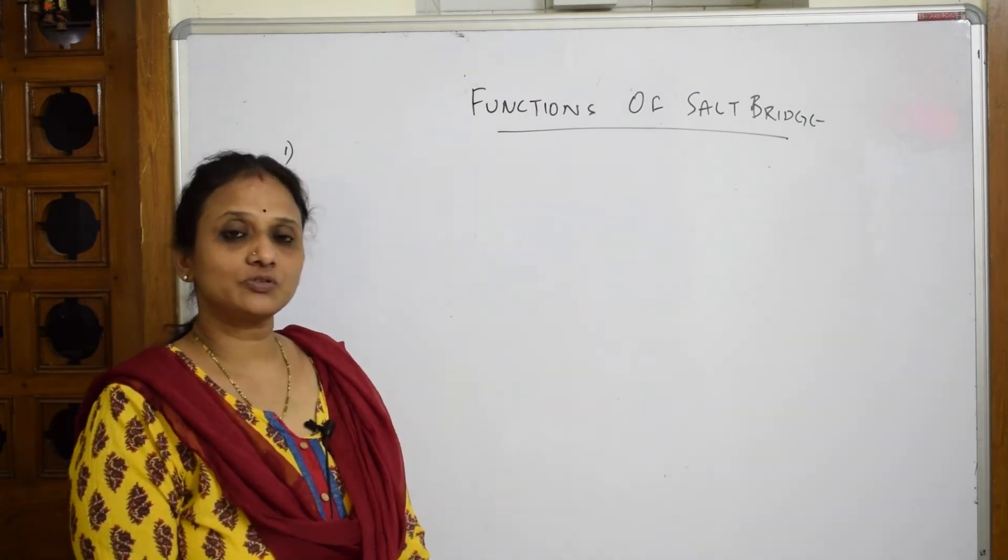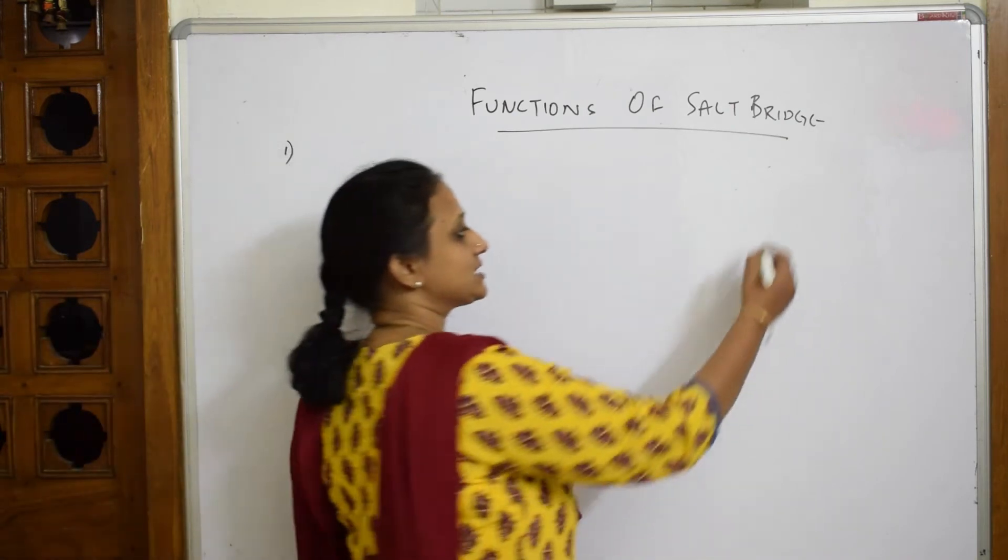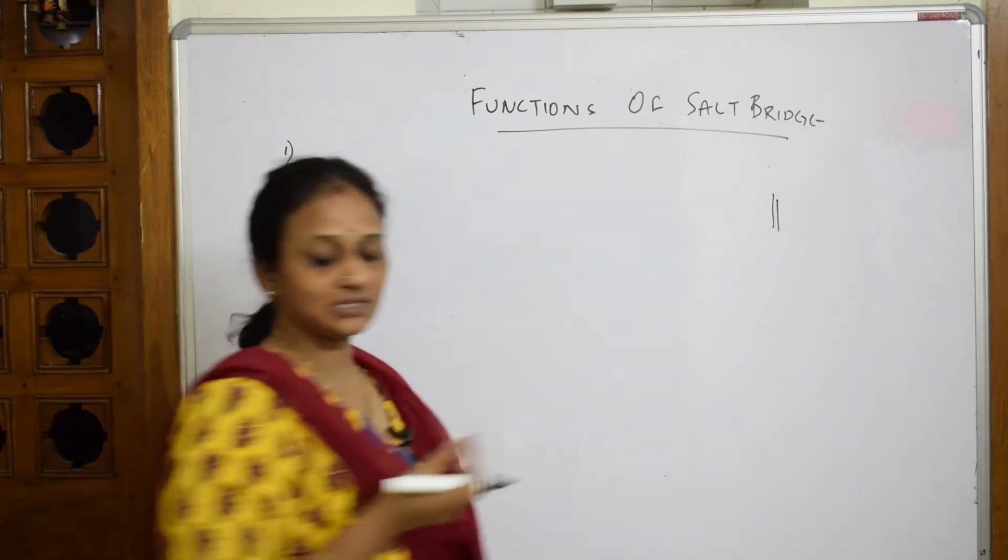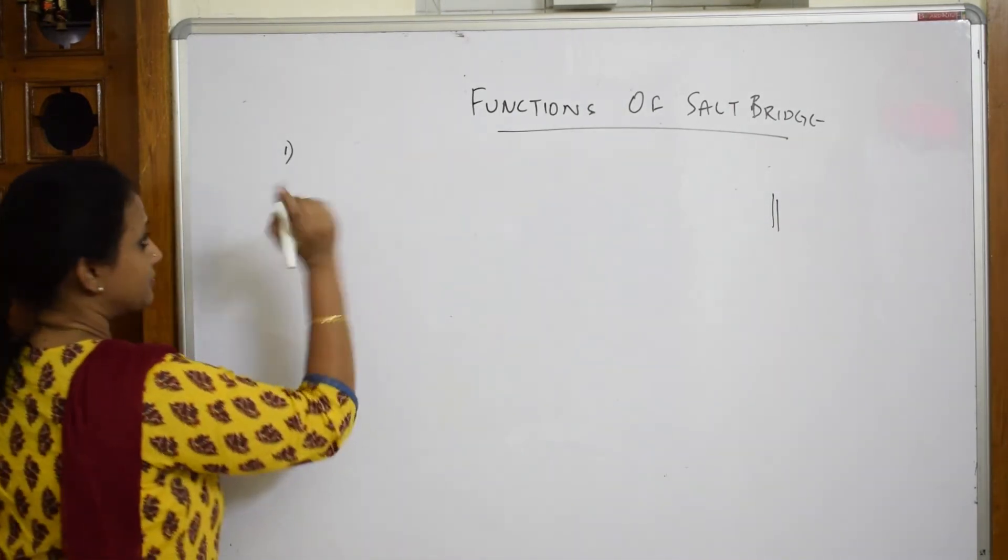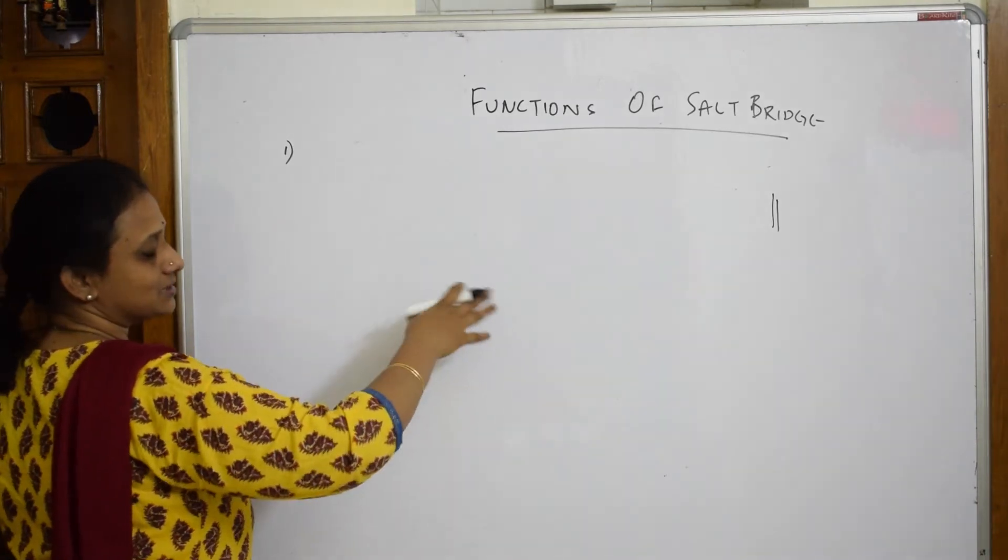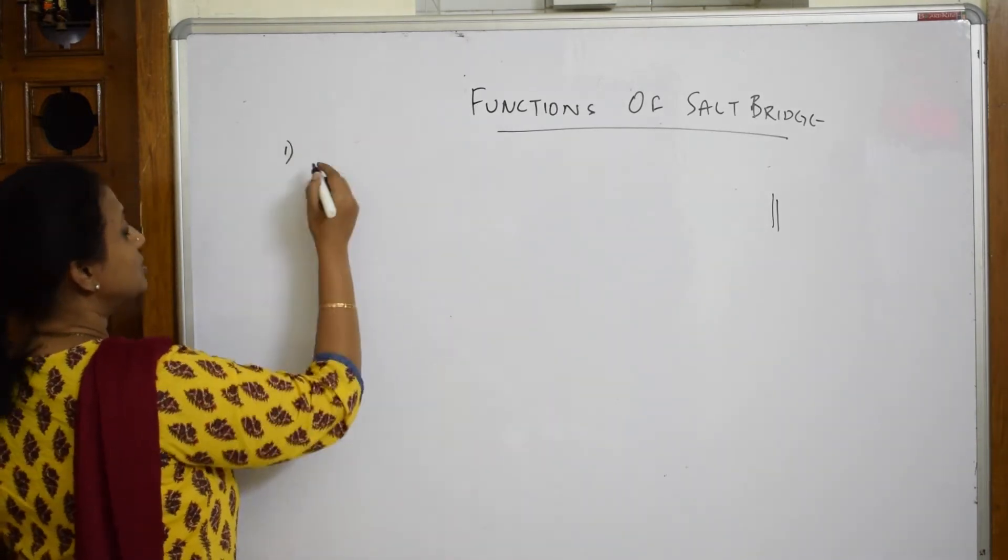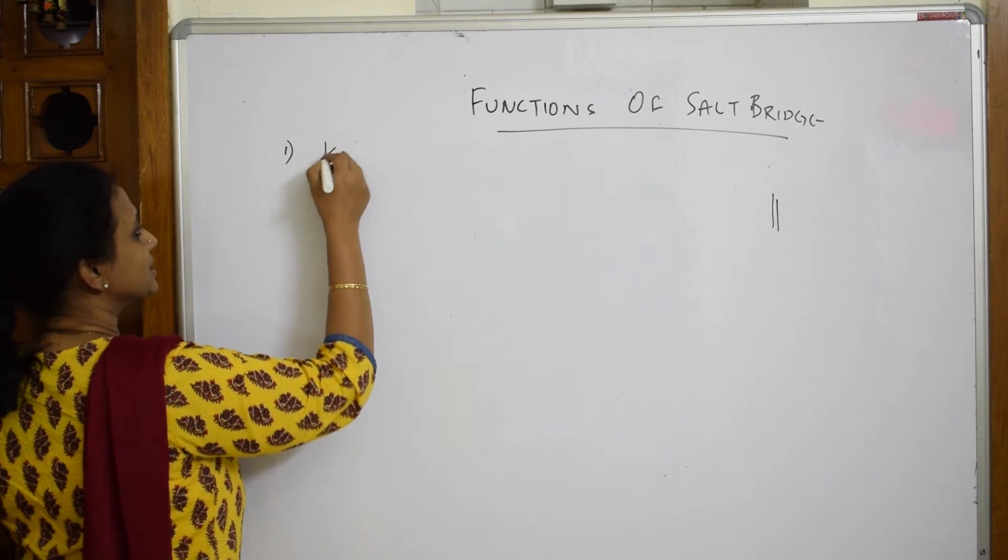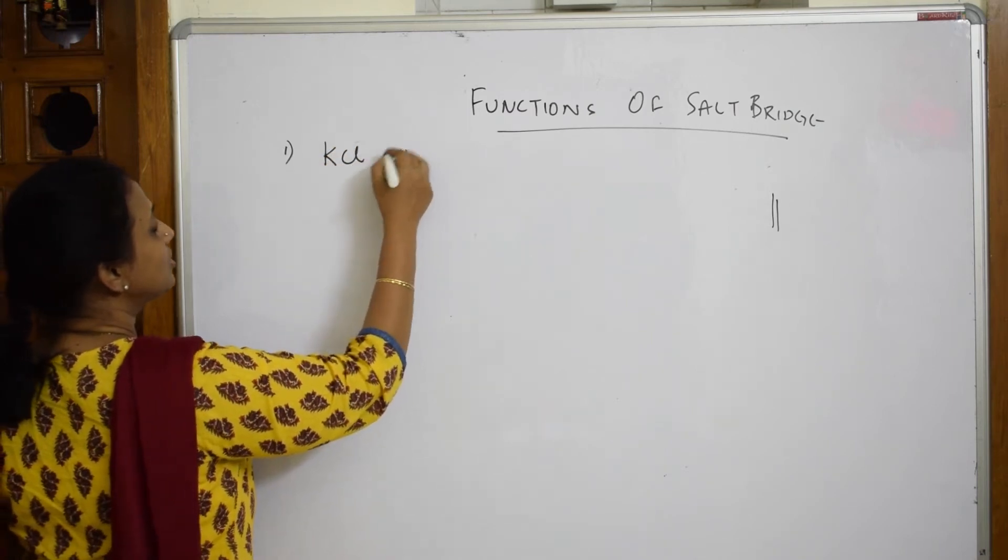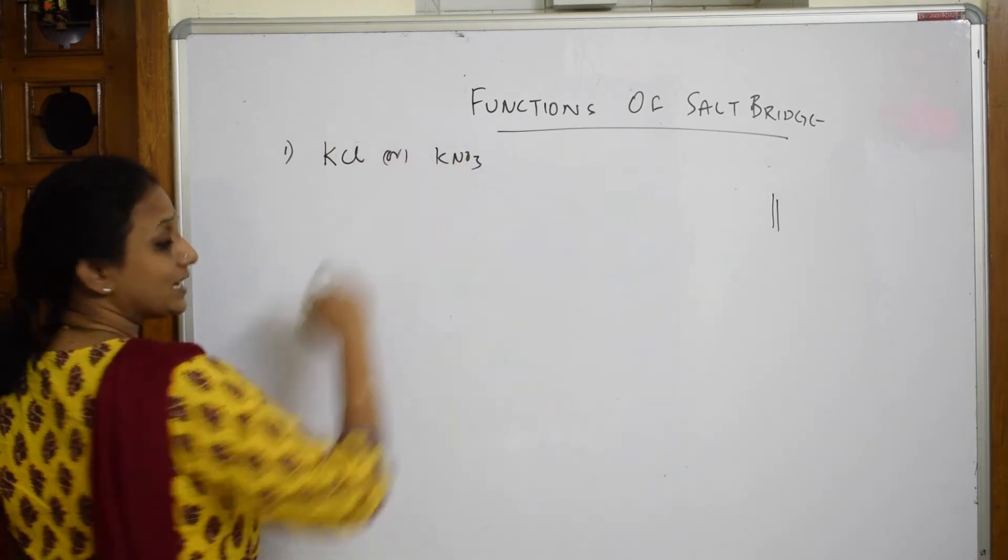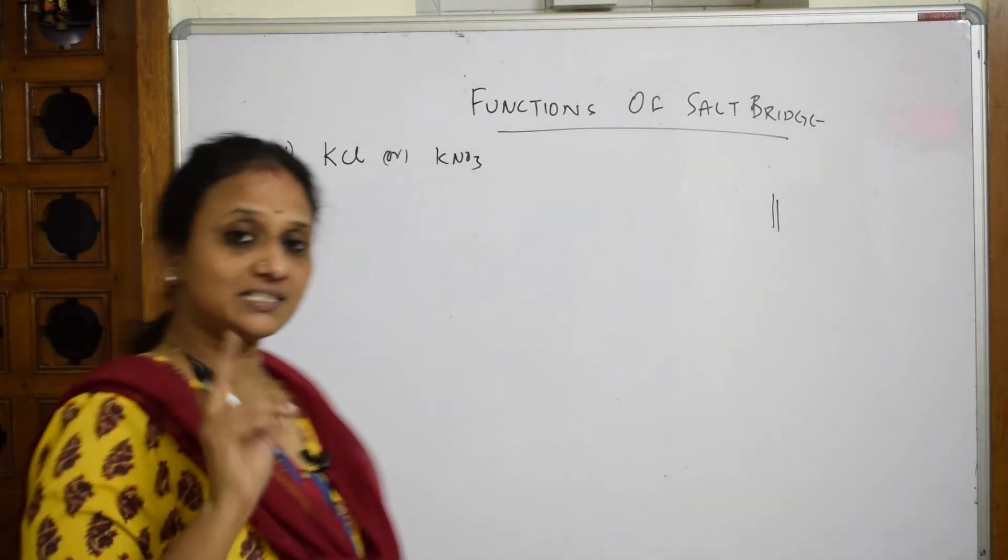The salt bridge we already represented with these double lines. So what actually is the function? When I have to write the first important function, simple, direct, nothing big logic - salt bridge's first important thing: basically it is made up of either KCl or KNO3.